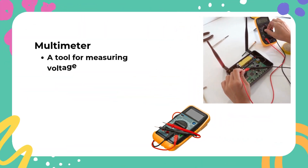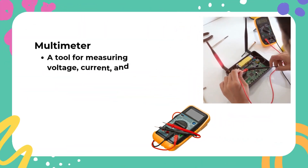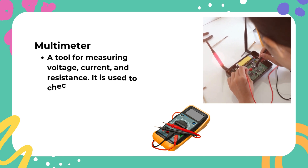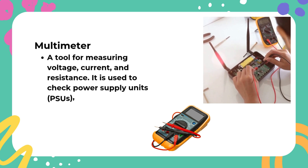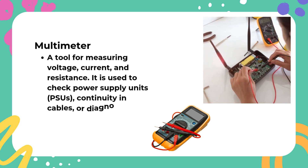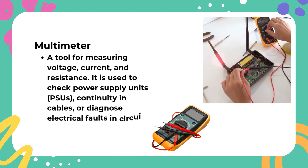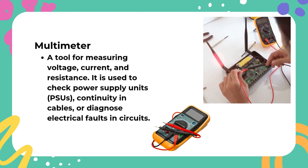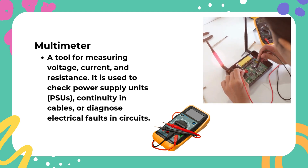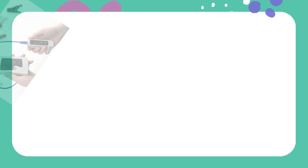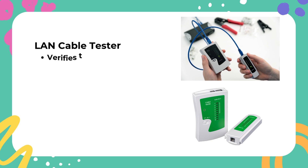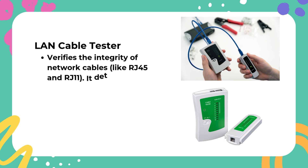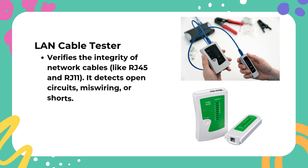Multimeter: A tool for measuring voltage, current, and resistance. It is used to check power supply units (PSUs), continuity in cables, or diagnose electrical faults in circuits. LAN Cable Tester: Verifies the integrity of network cables like RJ45 and RJ11. It detects open circuits, miswiring, or shorts.